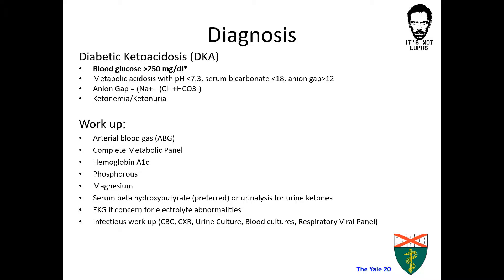In order to make this diagnosis, the following lab workup is needed: a blood gas, a complete metabolic panel, hemoglobin A1c, phosphorus, magnesium, ketone levels — preferably serum beta-hydroxybutyrate, although a urinalysis for urine ketones is also acceptable — and consideration for EKG and infectious workup where indicated. This workup will usually demonstrate hyponatremia, hyperkalemia, and hyperphosphatemia, even though total body potassium and phosphate levels are usually low.